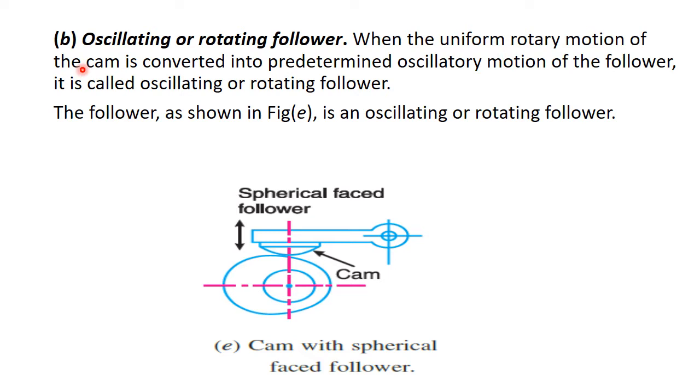Second one is oscillating or rotating. When the uniform rotary motion of cam, that is the cam that rotates with uniform velocity, and predetermined oscillatory motion of follower. It depends upon the cam profile. It is called oscillating or rotating follower. Here you can see that if cam rotates either clockwise or anticlockwise, in both cases, follower moves clockwise or anticlockwise but not take 360 degree. Only some angular deflection occurs on follower. That case is called rotary or oscillatory follower.